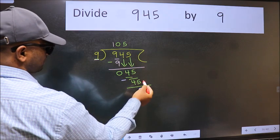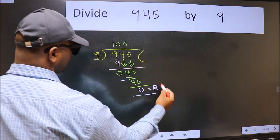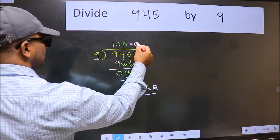No more numbers to bring down, so we stop here. This is our remainder, and this is our quotient.